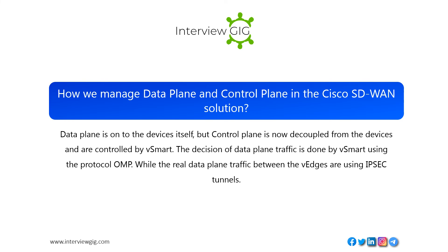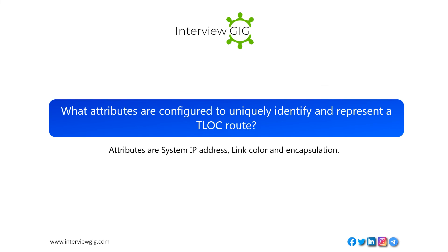How do we manage the data plane and control plane in the Cisco SD-WAN solution? The data plane resides on the devices themselves, but the control plane is decoupled from the devices and is controlled by vSmart. The decision of data plane traffic is done by vSmart using the protocol OMP, while the real data plane traffic between the V-Edges uses IPsec tunnels. What attributes are configured to uniquely identify and represent a TLOC route? The attributes are system IP address, link color, and encapsulation.